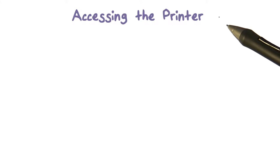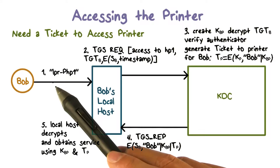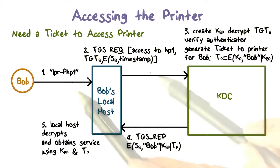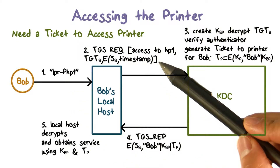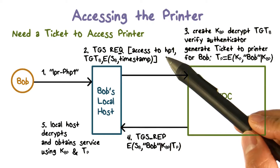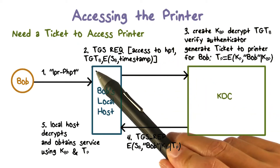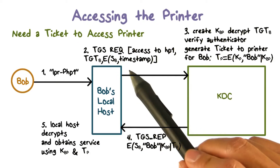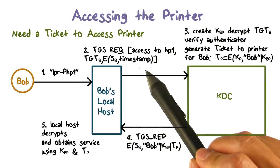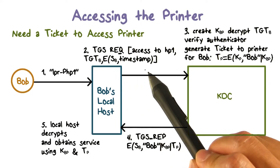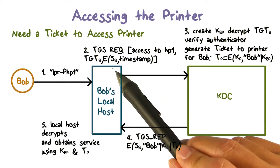Suppose Bob wants to send a print job to the printer HP1. His local host sends a ticket-granting service request to the KDC. The request contains the ticket-granting ticket and an authenticator, which is the current timestamp encrypted using Bob's per-day session key SB.